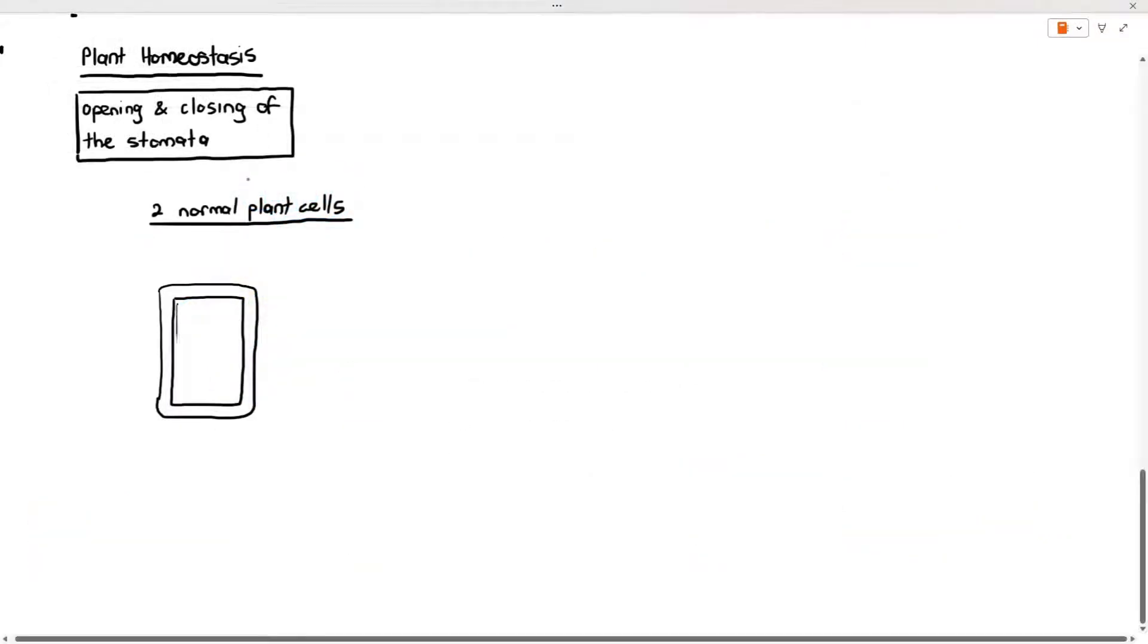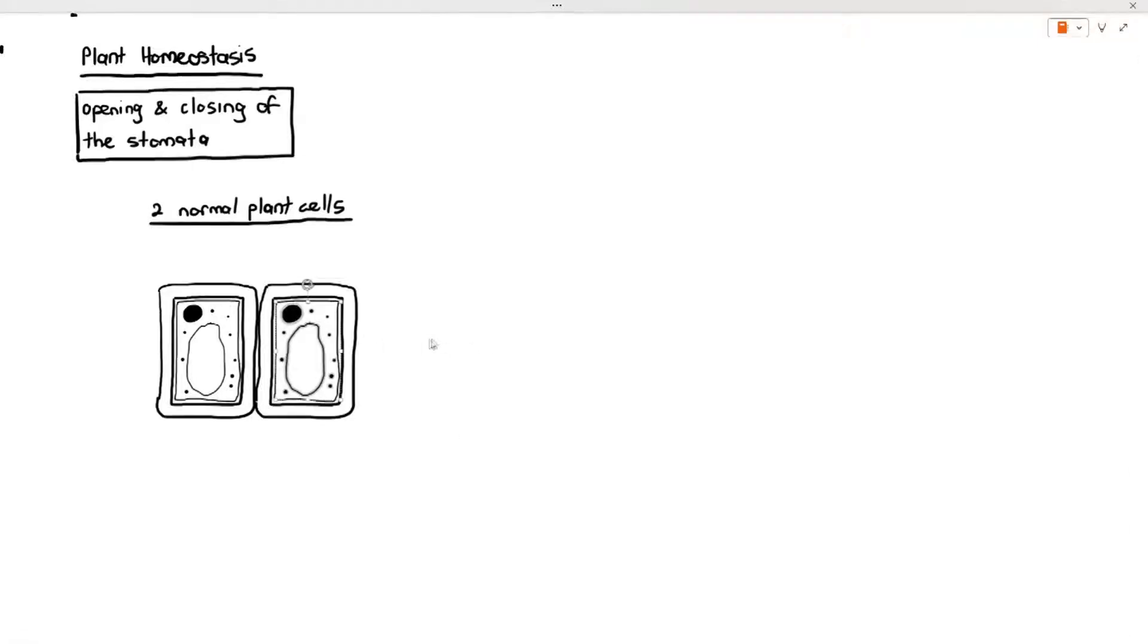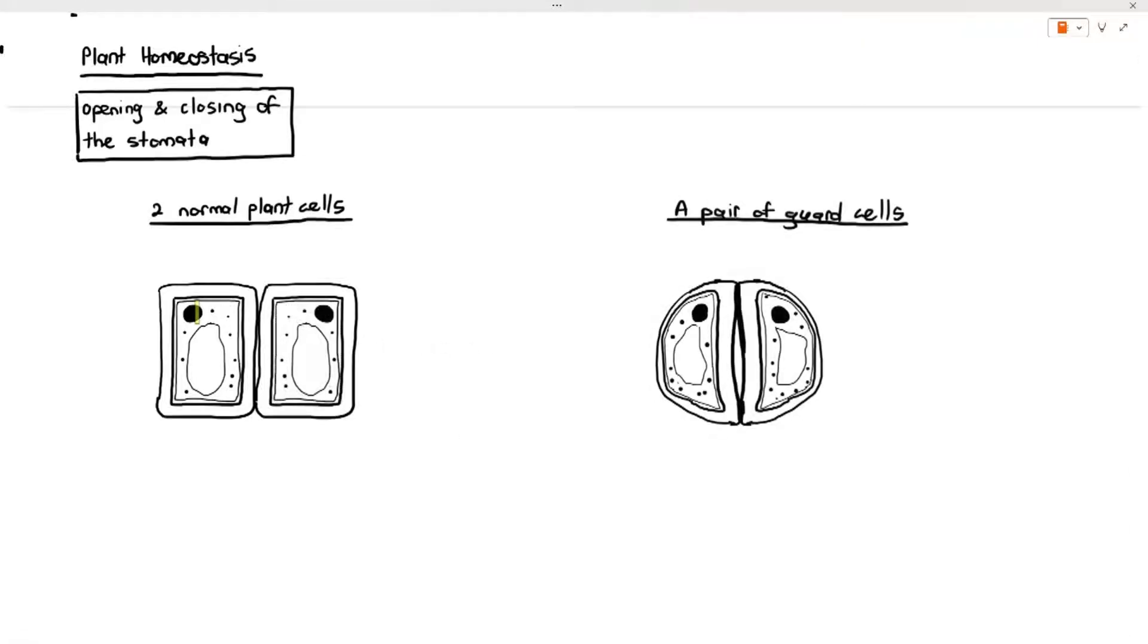What I mean by this is I'm drawing out two plant cells over here, two normal plant cells, and I'm gonna show you also a pair of guard cells. They are both plant cells but the guard cells have a very special shape and they also have quite special characteristics.